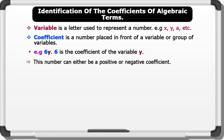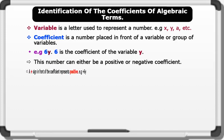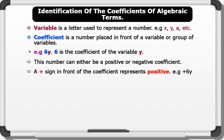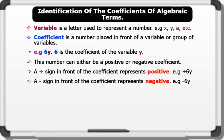This number can either be a positive or negative coefficient. Note that a plus sign in front of the coefficient represents positive, while a minus sign in front of the coefficient represents negative. Note that 6Y is the same as plus 6Y.